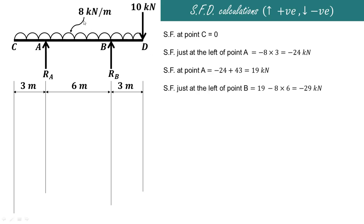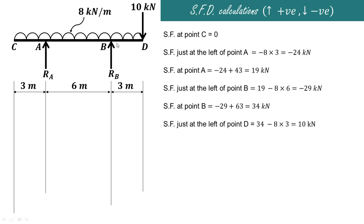Just to the left of B, we consider the UDL between A and B. Up to A we already have 19 kilonewtons. The UDL over 6 meters is 8 into 6, which is 48 kilonewtons downward, so minus 48. Therefore 19 minus 48 gives minus 29 kilonewtons. Exactly at B, adding the upward reaction of 63 kilonewtons: minus 29 plus 63 gives 34 kilonewtons. Just to the left of D, the UDL over 3 meters gives 34 minus 24, which is 10 kilonewtons. At point D, adding the downward 10 kilonewton load gives 0 kilonewtons.